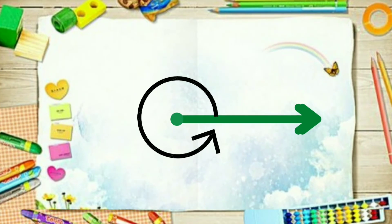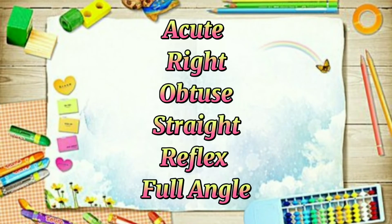So these are the types of angles: we have the acute angle, right angle, obtuse angle, straight angle, reflex angle, and full angle.